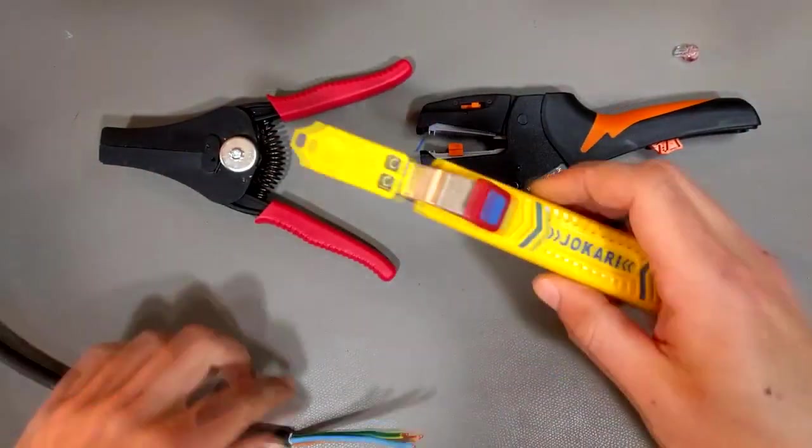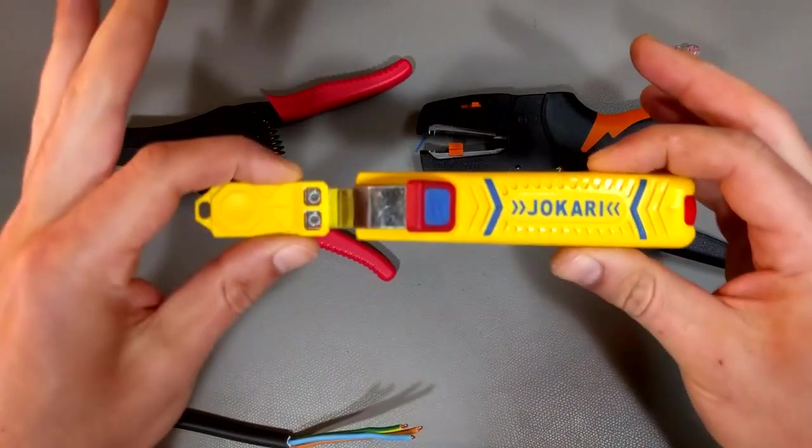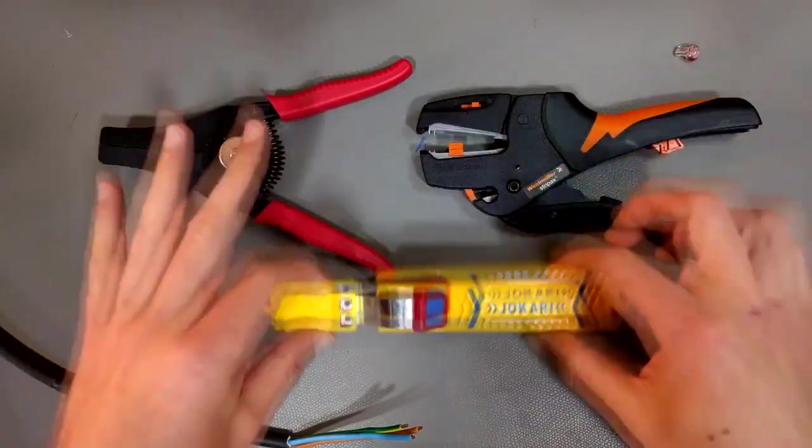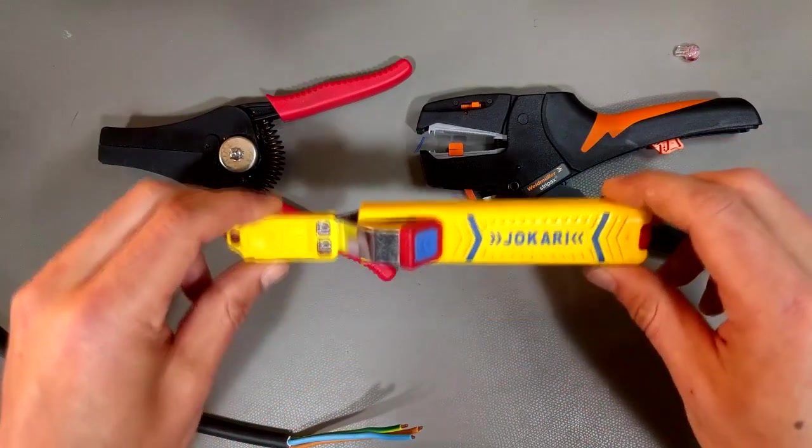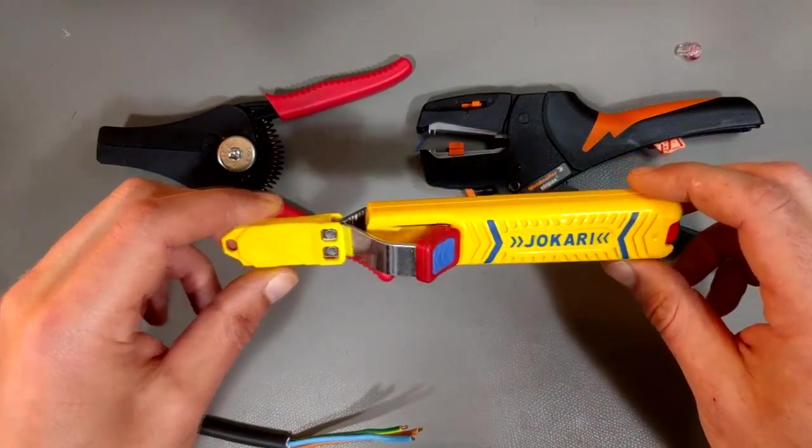And then the blade rotates and slices through, and that makes getting the insulation off these a lot easier. So that is a Jokari. There's another version of Jokari that's actually like a little tube. I hate that one because I could never get it. It doesn't like me.